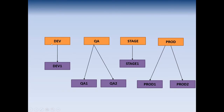For example, the dev environment may have one instance running, QA may have two instances running on different machines, stage may have one instance, and production may have two instances. If the load is increasing, your microservices should bring up another instance — the instances should scale up or scale down depending on the load. If QA has two instances running, they should both point to the same QA configuration service.